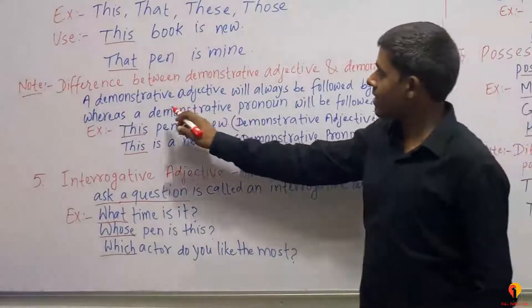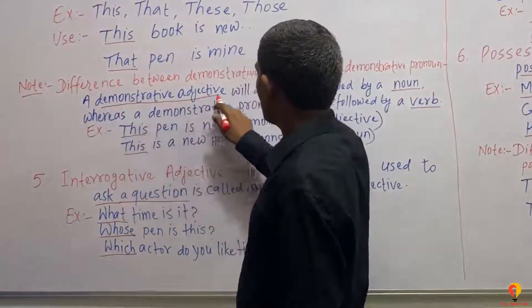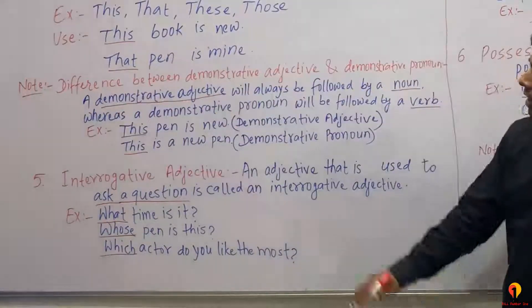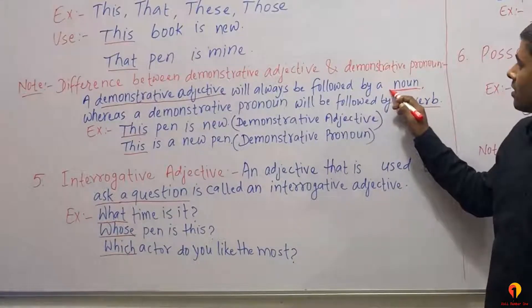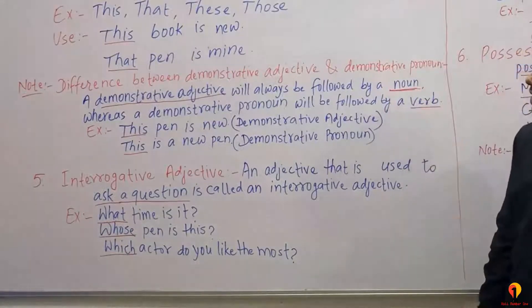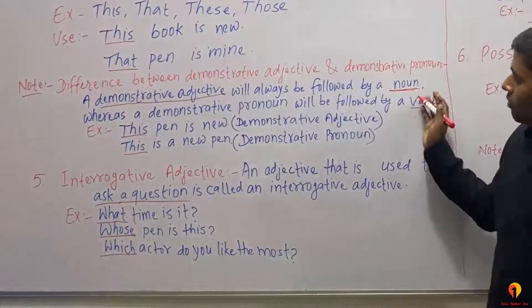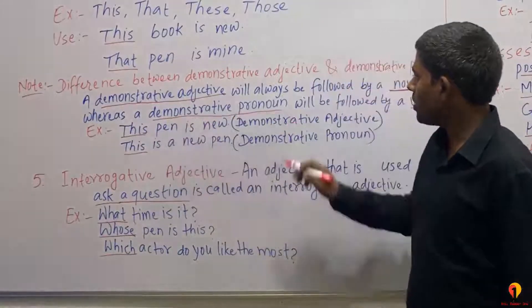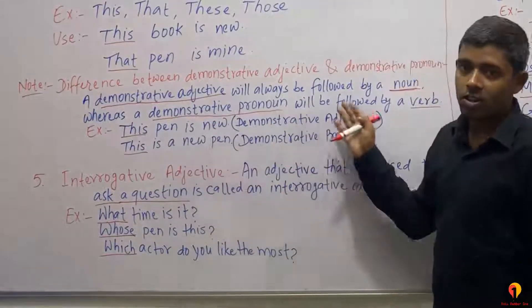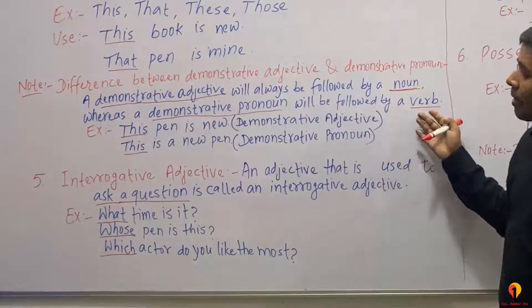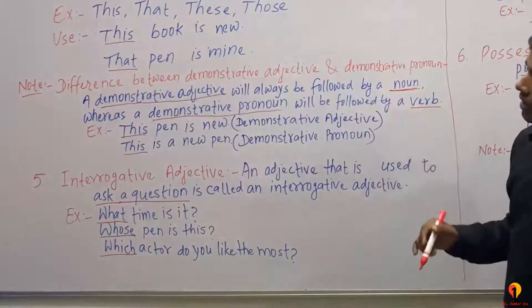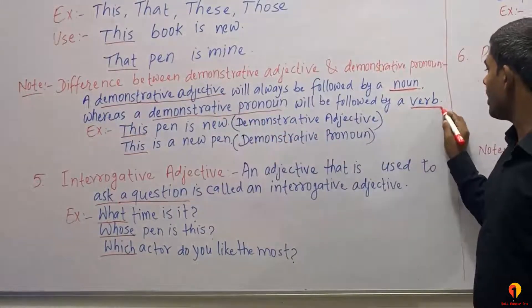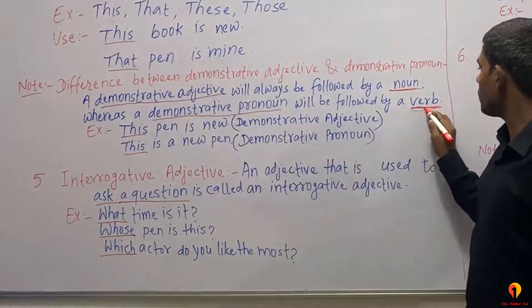A Demonstrative Adjective will always be followed by a noun. A Demonstrative Pronoun, on the other hand, will always be followed by a verb.